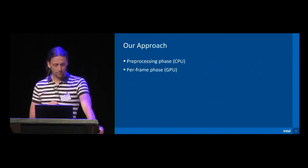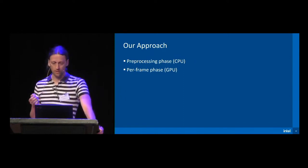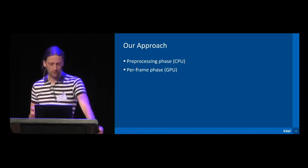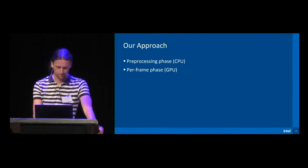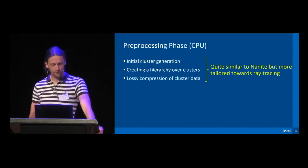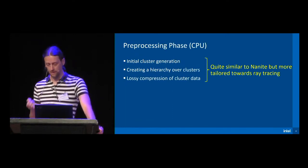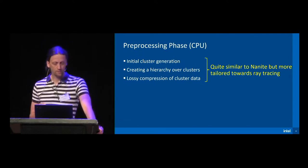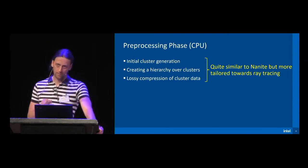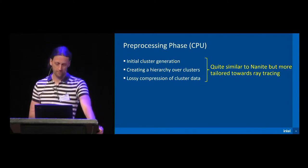Let me give a brief overview of our approach. Similar to Nanite, it consists of two phases: a CPU-based preprocessing phase, and a per-frame phase exclusively executed on the GPU. I would like to present a little more detail, starting with the preprocessing phase. The preprocessing phase consists of three steps: the initial cluster generation, creating the hierarchy over these clusters, and lossy compression of the cluster data. All of these steps are quite similar to Nanite, but our implementation is a little bit more tailored towards ray tracing.